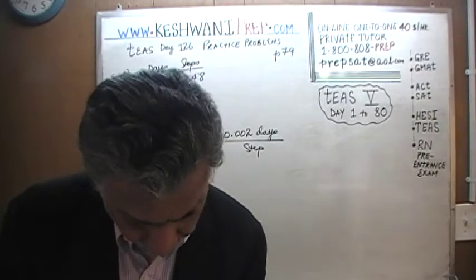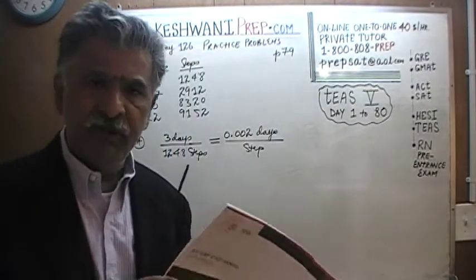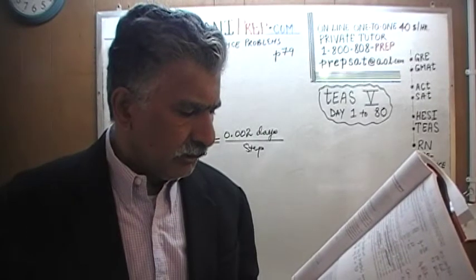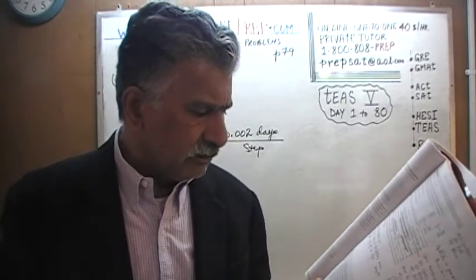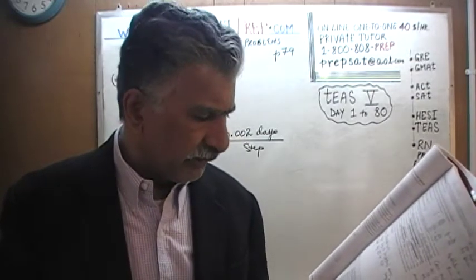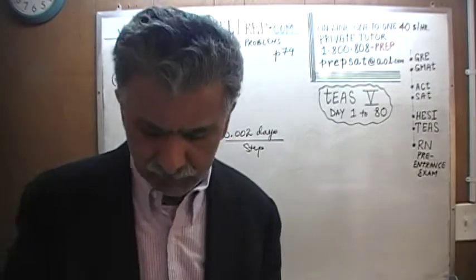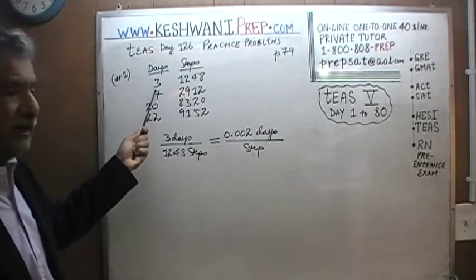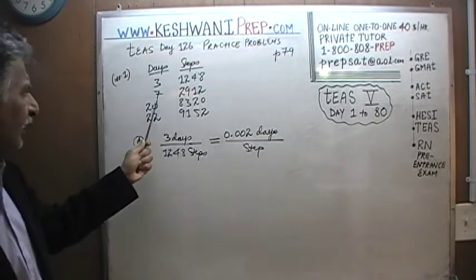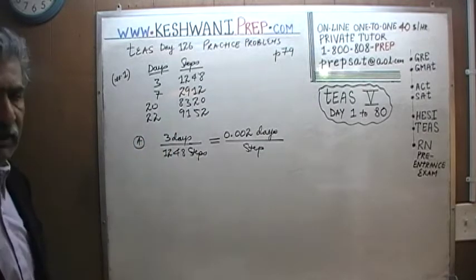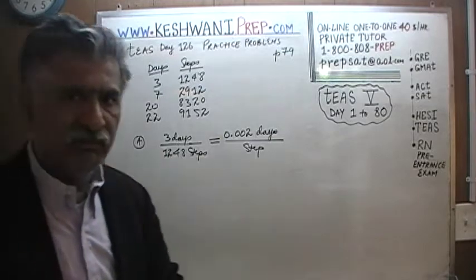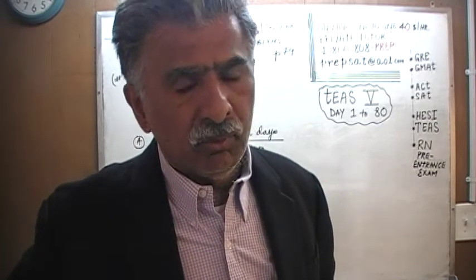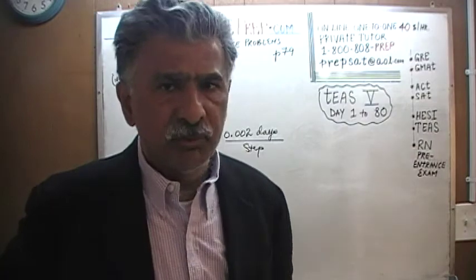In question number 1, it says Mary has entered some sort of fitness regime. It's important that you have the book in front of you, otherwise you will have trouble following me. Apparently she has entered a fitness regime where she has decided to go for a walk during her lunch break and she has kept a log of her walk. The log is partial — not a complete record. At the end of day 3 she has taken 1,248 steps; at the end of day 7, 2,912 steps; at the end of day 22, 9,152 steps. Based on the records we have, which of the four given statements would apply?